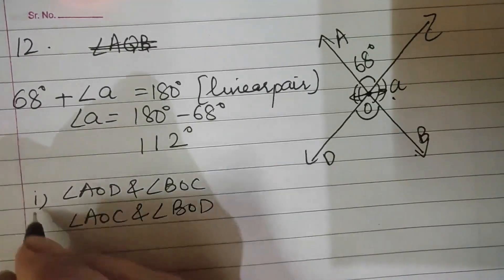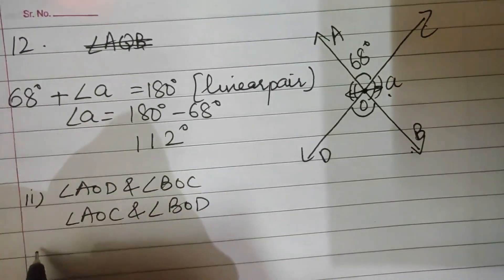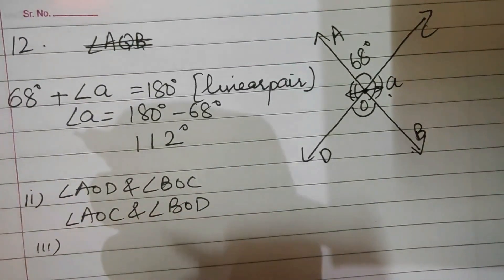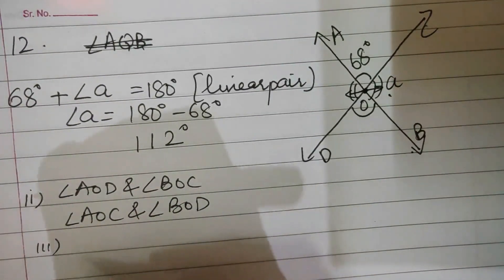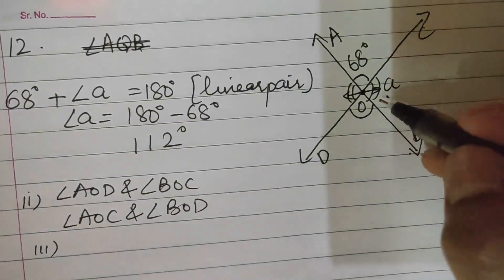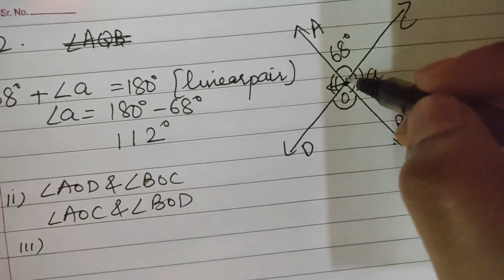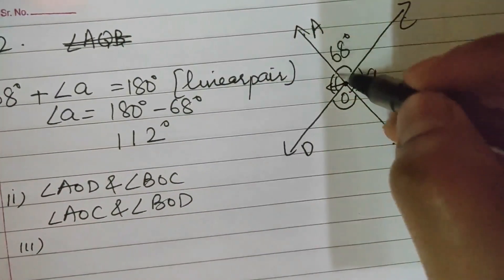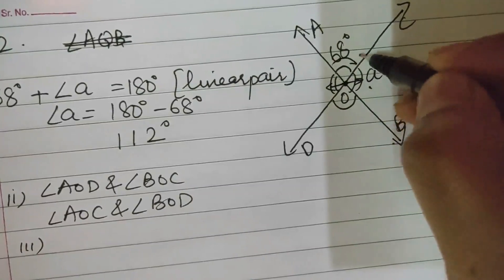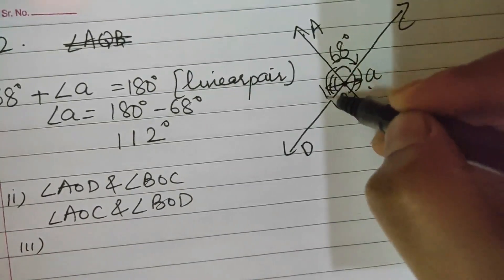Third part: name all pairs of adjacent angles. If I take OA as a common arm: angle AOC and angle AOD are adjacent angles.